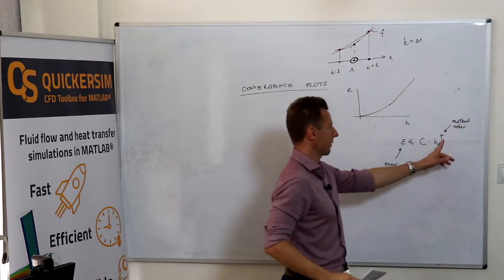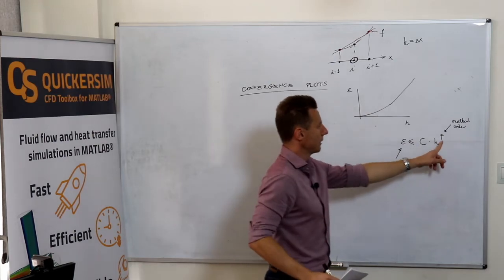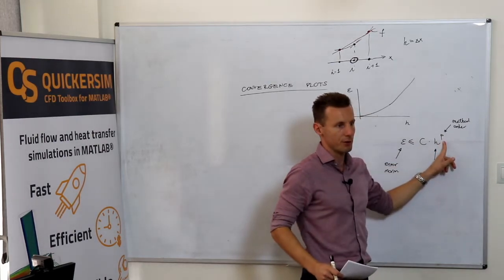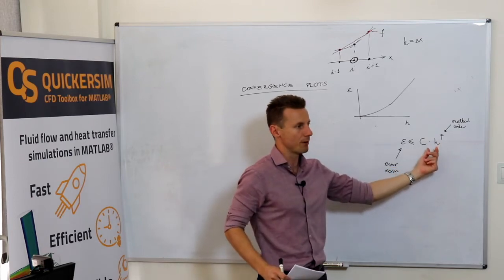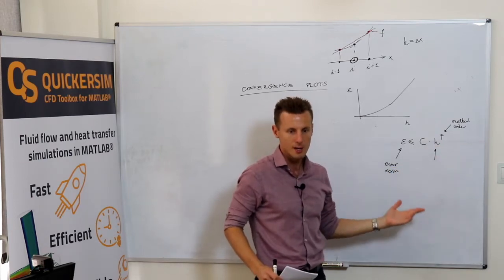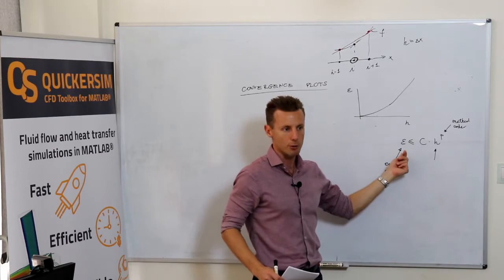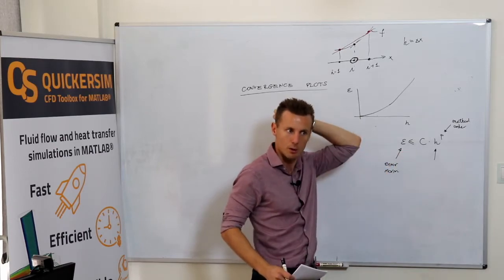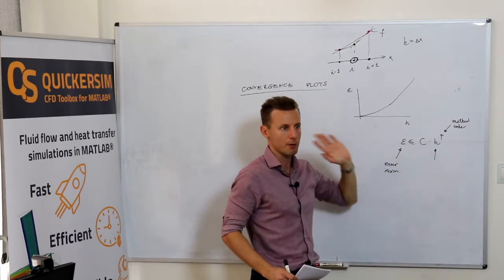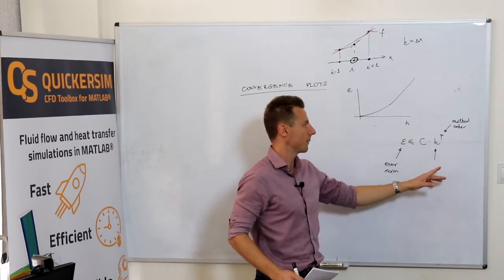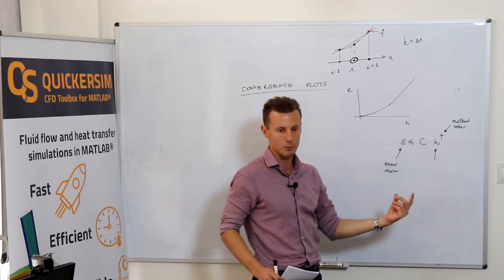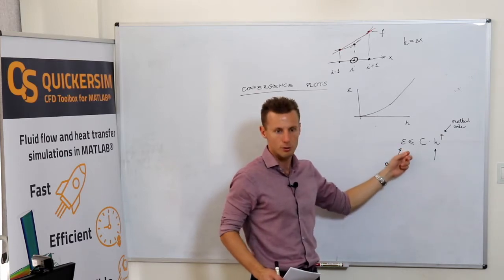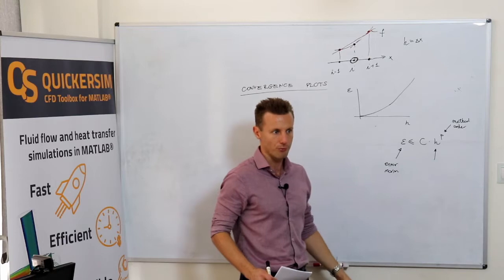That's probably something that you already know as well. So if you've got a method of the first order, this means that if you refine your discretization twice, then the error should drop also by a factor of two. If you've got a second order method, if you refine the discretization by a factor of two, your error should drop by a factor of four.